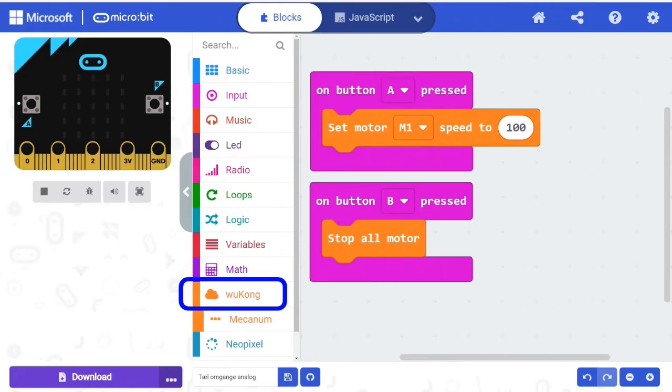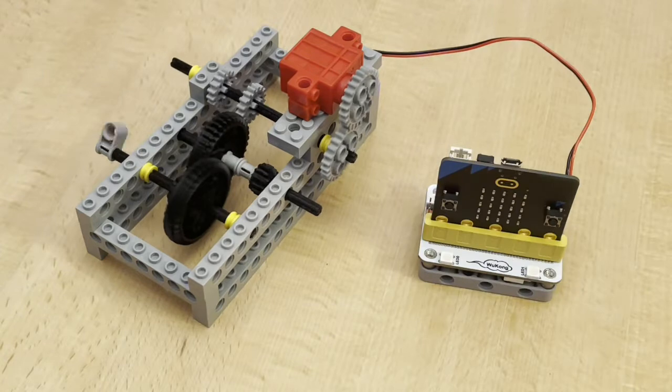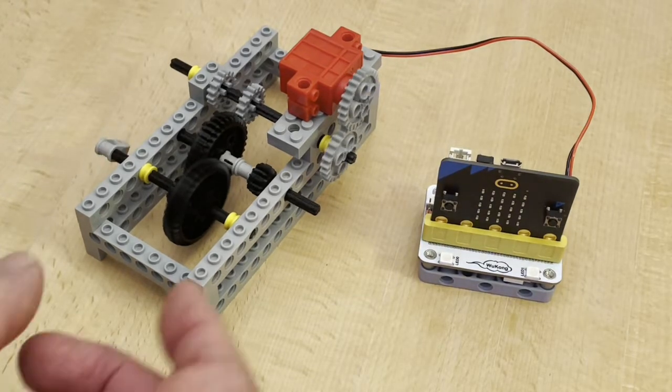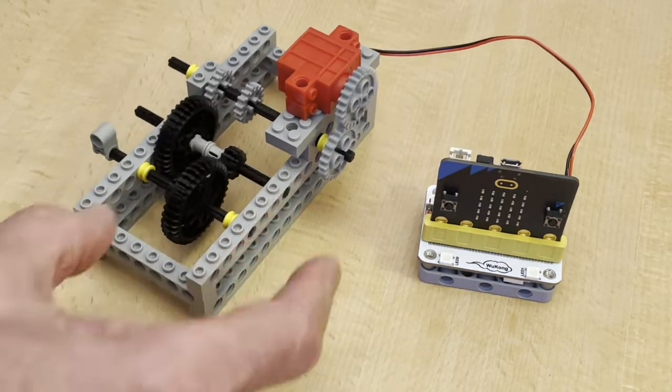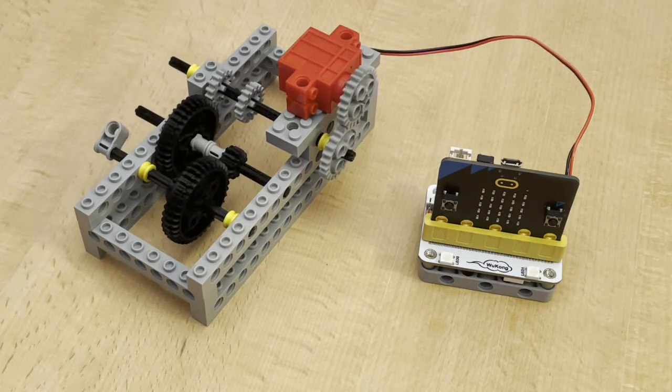Inside MakeCode you need to download an extension called Wukong. Then we download this little program to the microbit. Now we can change gear as well as start and stop the motor.